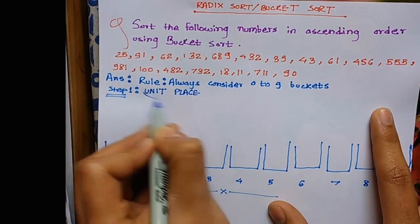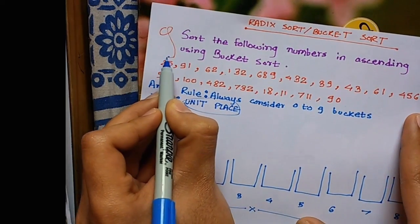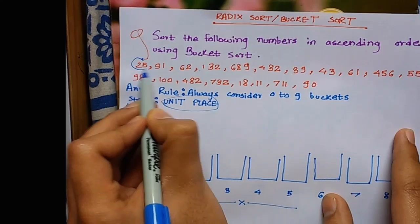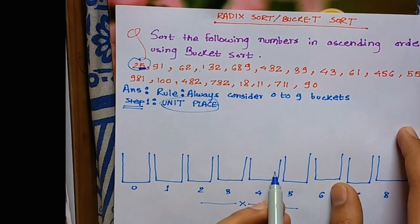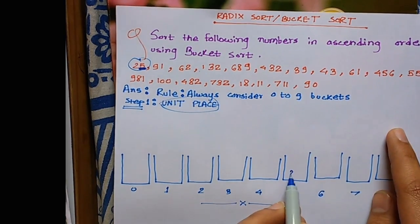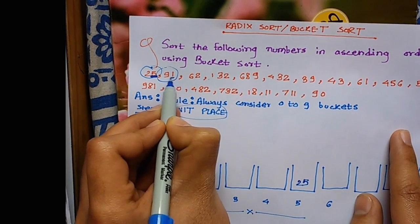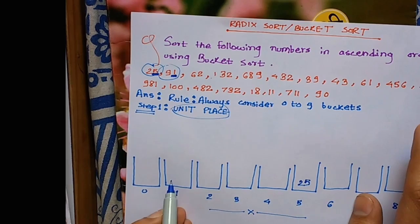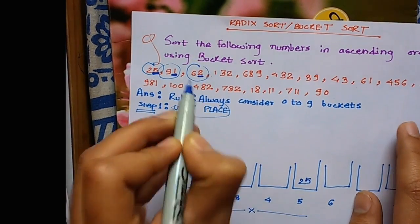Step 1 is unit place. We consider individual elements and check their unit position. In 25, the unit place is 5, so 25 goes in the 5th bucket. Next is 91, which has 1 in its unit place, so 91 goes in bucket 1. 62 has unit place 2, so it goes in bucket 2.